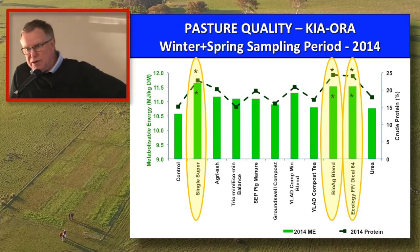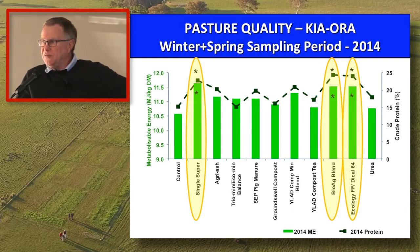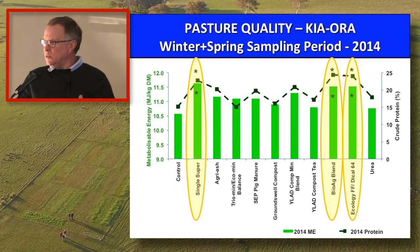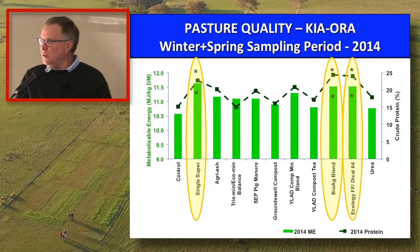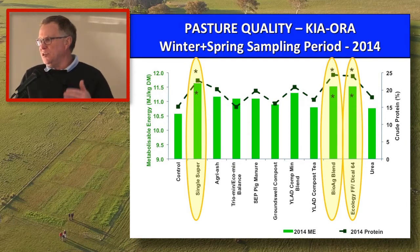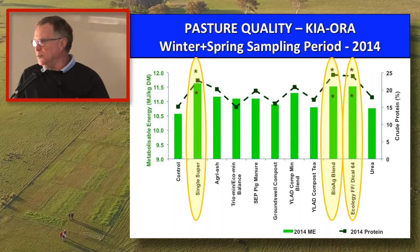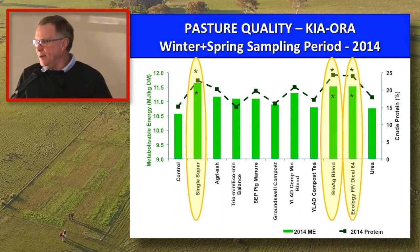Why didn't we start doing quality earlier? The range of products that went out — some had liming capacity, some were slow release. You really need to put these products out and give them a chance to work and drive some botanical composition before you start doing quality data. That's the reason why we didn't start quality data right at the start.